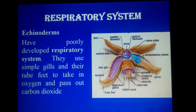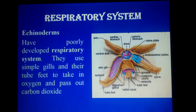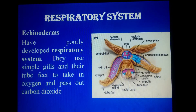The respiratory system also depends on the water vascular system and occurs through the general body surface. They have simple skin gills along with the tube feet. So respiration and circulation are all the simplest, and everything depends on the water vascular system, which consists of tube feet.